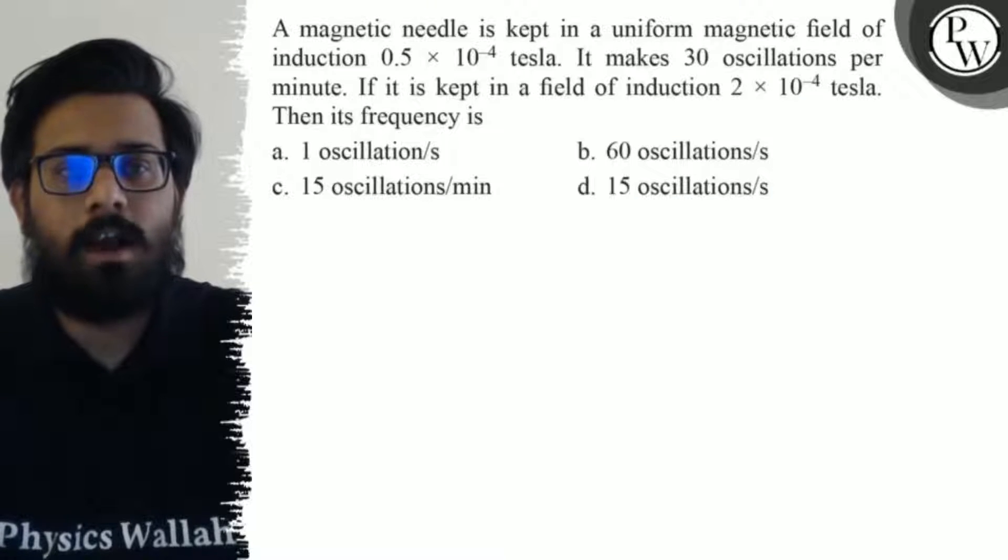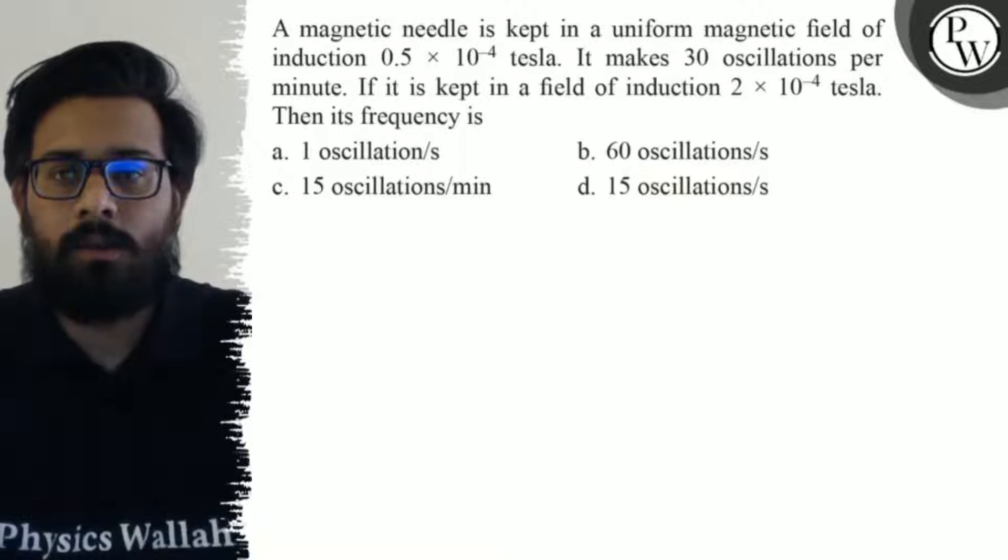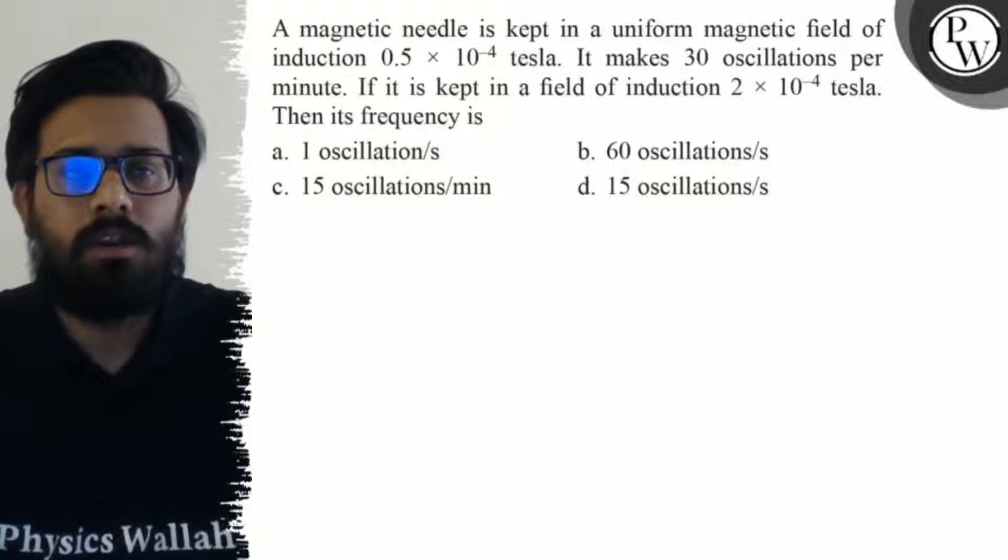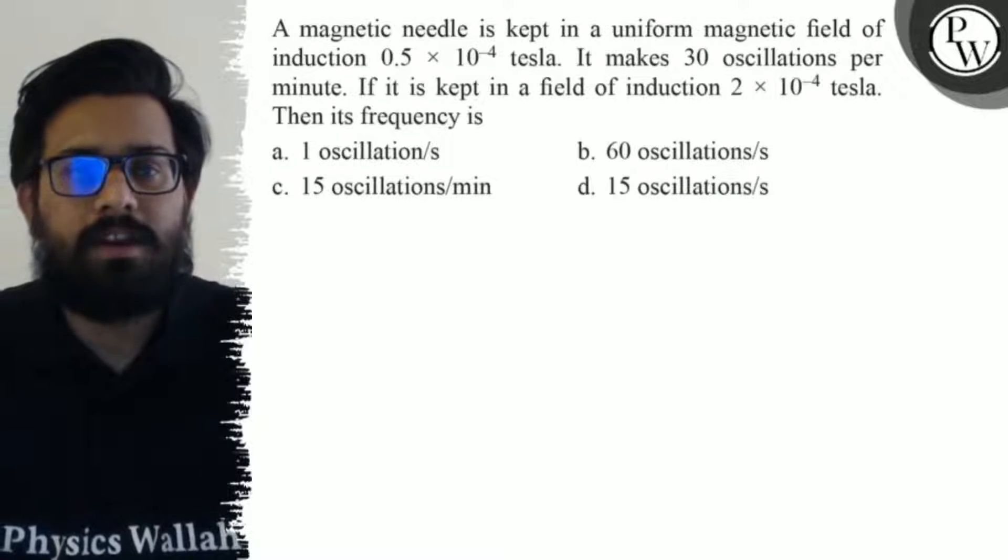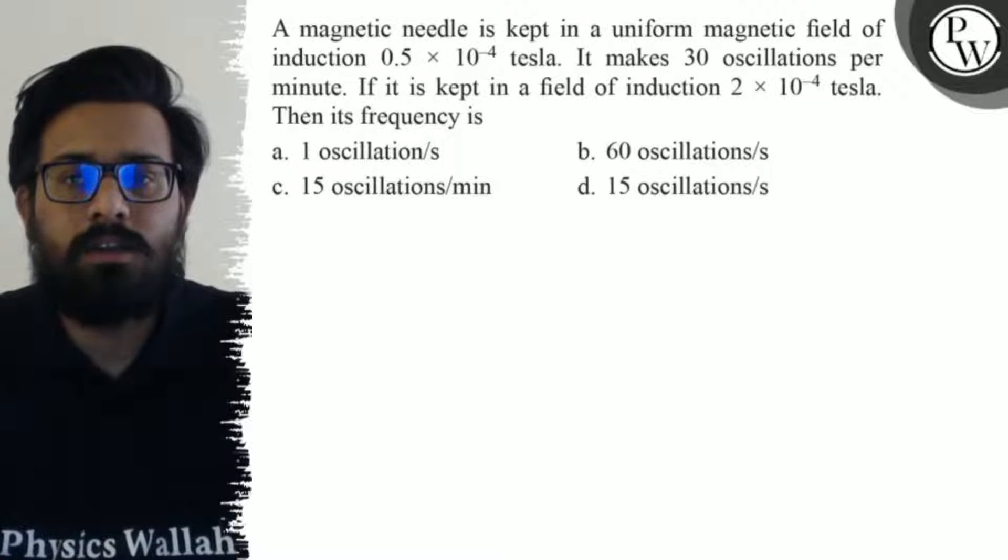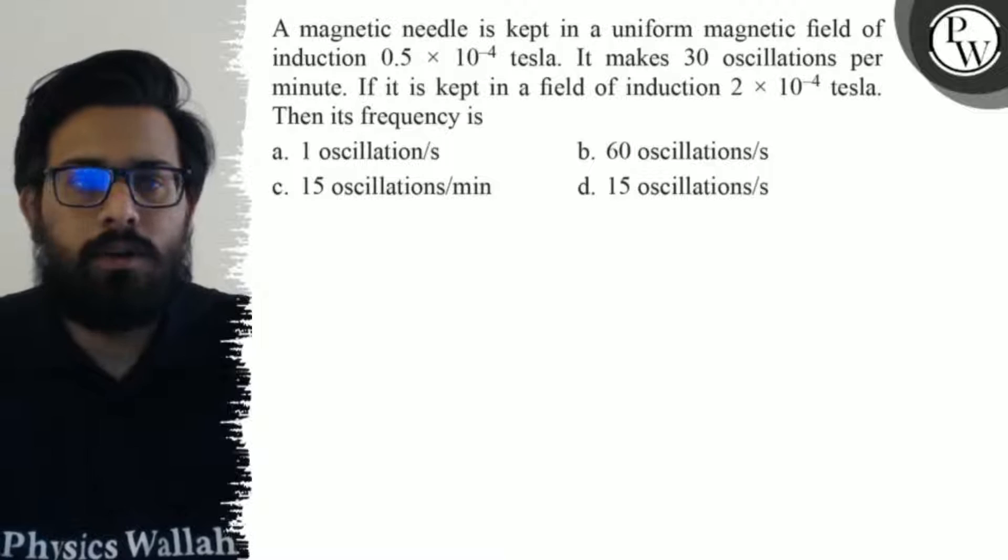Hello bachos. So let's see the question. A magnetic needle is kept in a uniform magnetic field of induction 0.5 × 10⁻⁴ tesla. It makes 30 oscillations per minute. If it is kept in a field of induction 2 × 10⁻⁴ tesla, then its frequency is...